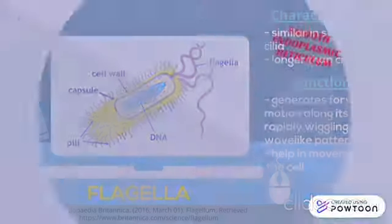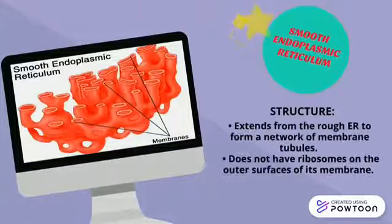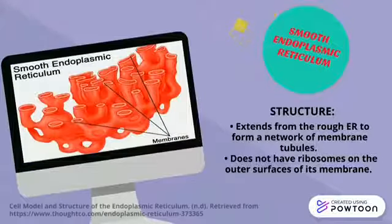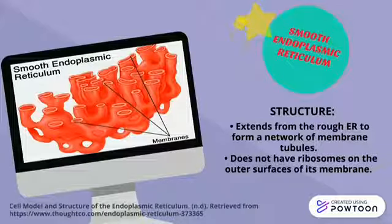Smooth endoplasmic reticulum is an organelle that extends from the rough endoplasmic reticulum to form a network of membrane tubules. It does not have ribosomes present on the outer surface of its membranes.